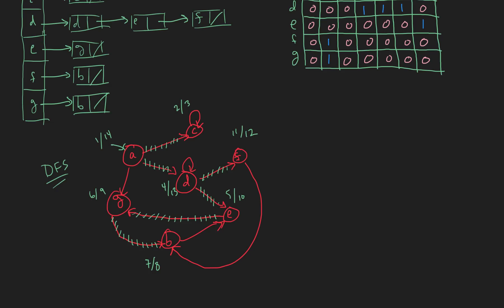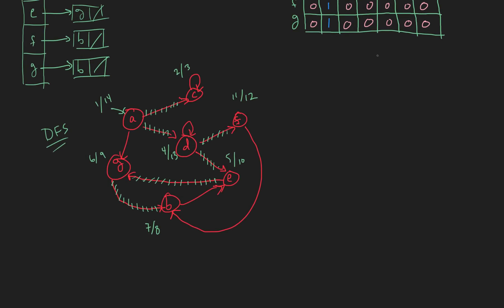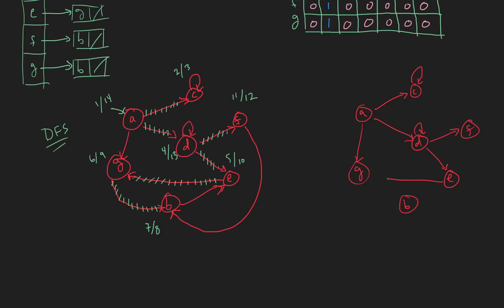That was kind of fun. Let's do breadth-first search on this same one. Let's just redraw this to get some practice in. So we've got C over here, G, F over here, B down here, and E over here. There are paths connecting all the nodes.